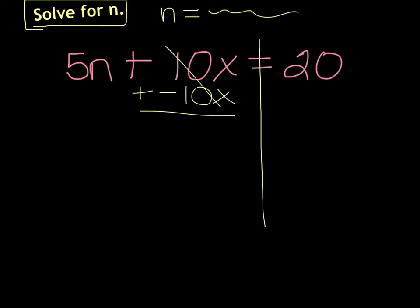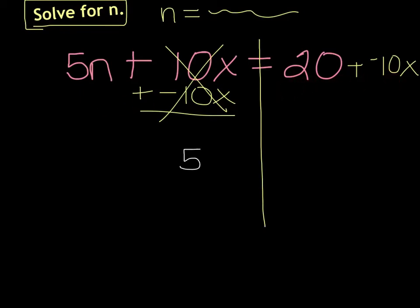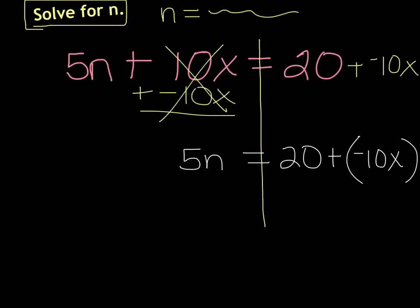Those are going to cancel. So over here I'm going to add a negative 10x. Now I can't put a negative 10x with the 20 because those aren't like terms. So I just have to rewrite it like this — 20 plus negative 10x. So here's what I have now: 5n on this side equals 20 plus negative 10x. You can put that in parentheses so you know it's a negative. Now I still have one more step because I don't want to know what 5n equals — I just want it to say n.